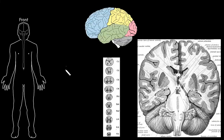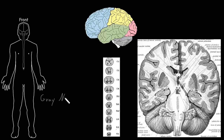In this video, I'm going to talk about gray and white matter. In the central nervous system, which is mostly the brain and the spinal cord, there are areas called gray matter that contain most of the neuron somas.